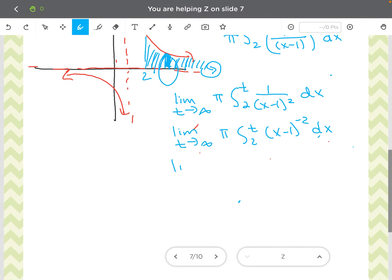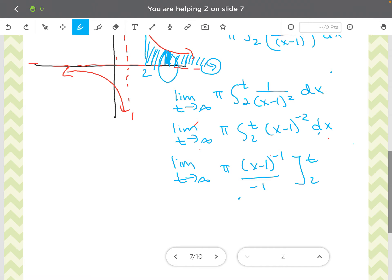So this is just your power rule. So all we're going to do is go ahead and add 1 to the power, divide by the power. And then I have my bounds.